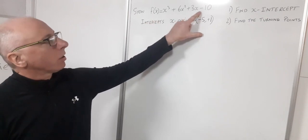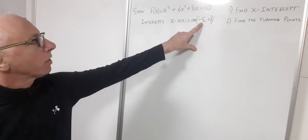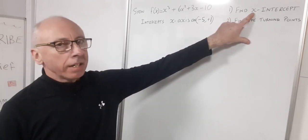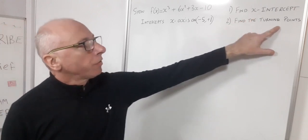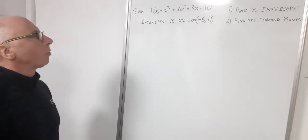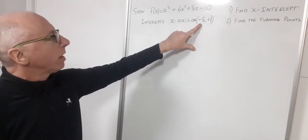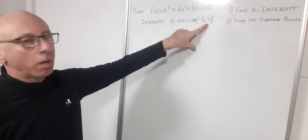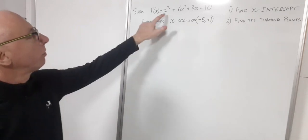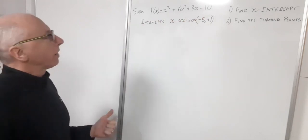In this video we want to show that this cubic polynomial intercepts the x-axis between minus 5 and plus 1. We want to find that x-intercept and also find the turning points of this cubic polynomial. When we get a question like this, the interval with round brackets minus 5 and plus 1 is indicating that possibly minus 5 and plus 1 are solutions for this cubic polynomial. So first let's check that's the case.